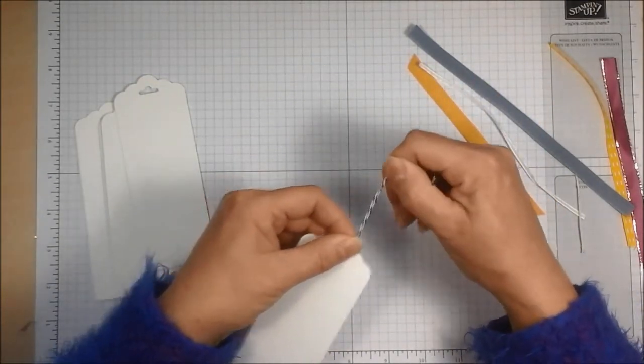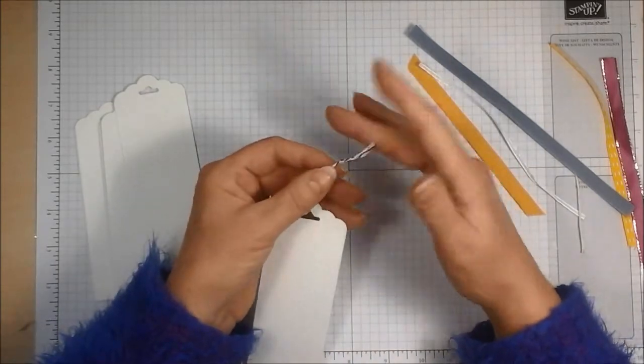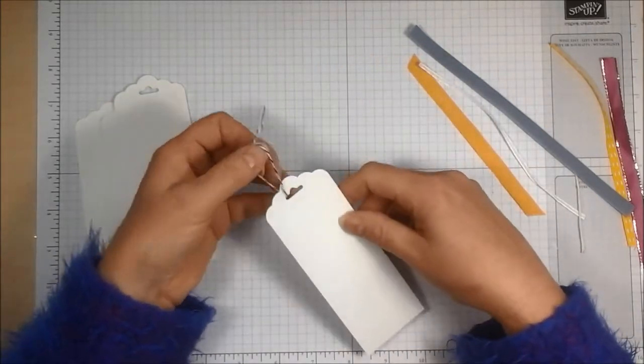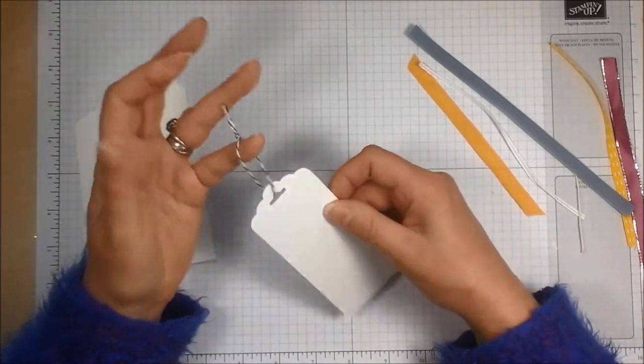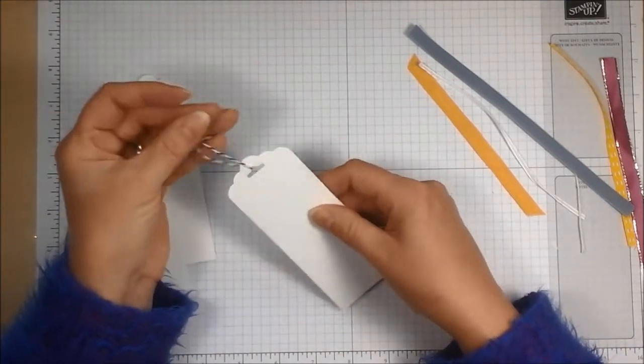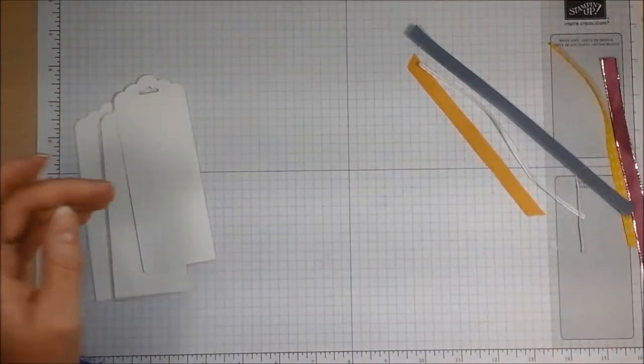And you can just tie it off like that, trim off the end and you've got a loop there, either for a bookmark or for a tag, and often people like that kind of attachment for a tag.